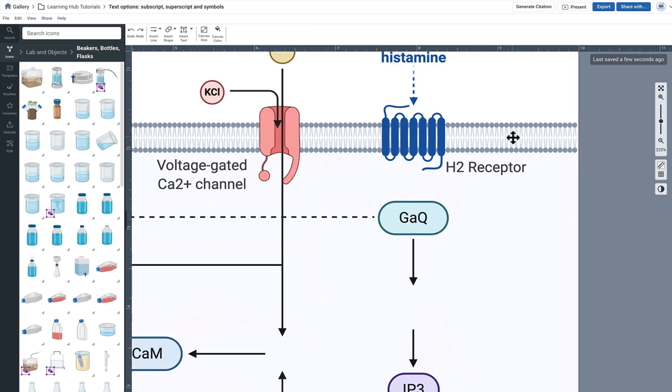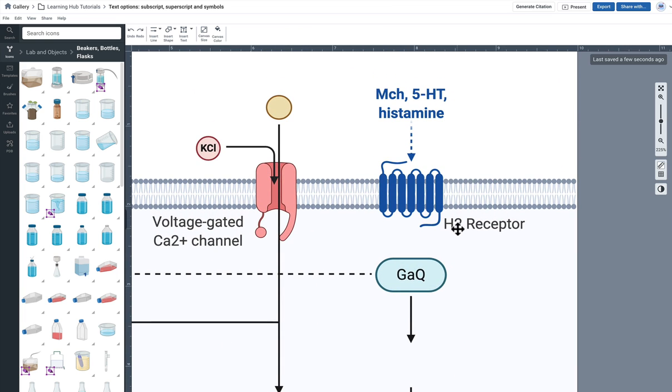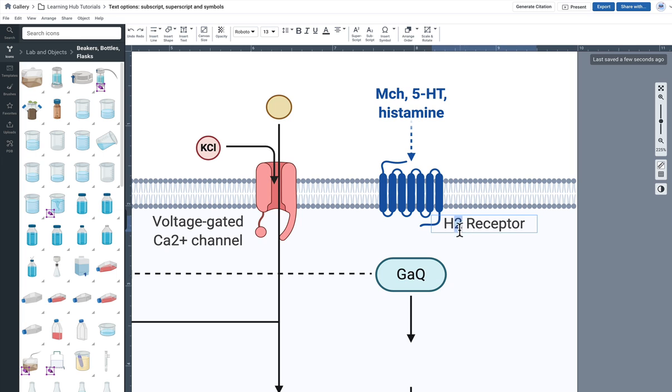I'm going to zoom into this part of my illustration and I'm going to want to make the 2 of the H2 into a subscript. So I'm going to highlight the number 2 and come up here to the subscript option and that's going to create a subscript for the number 2. So that's pretty straightforward.